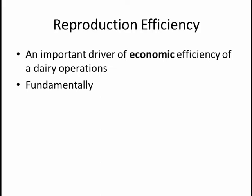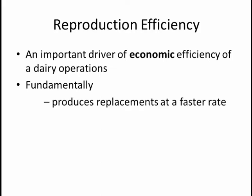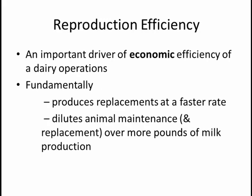Fundamentally, what reproduction efficiency does is it produces replacements at a faster rate, so there will be more available heifers to replace non-profitable cows or to expand the herd. It also does something that's more nuanced, and that is it dilutes animal maintenance and replacement over more pounds of milk production.